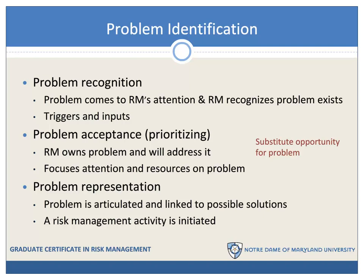The second part of the problem identification process is problem acceptance. This is when the risk manager recognizes that a problem exists and intentionally decides to own this problem — to take it on and address it. That means they will focus attention and resources on solving the problem.